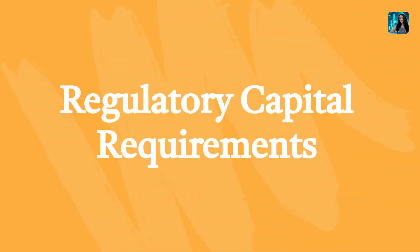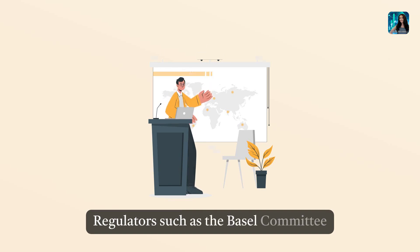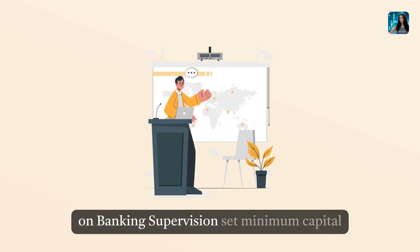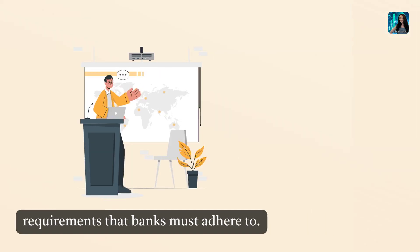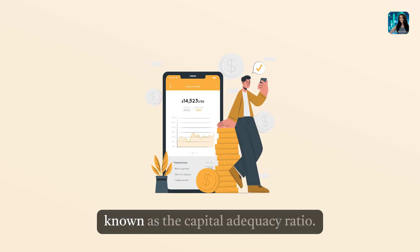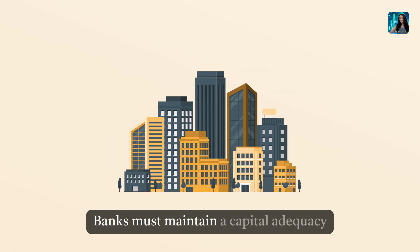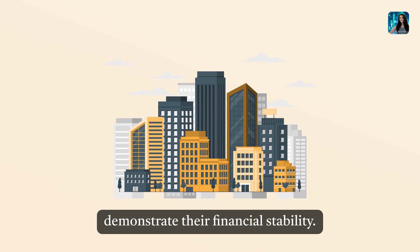Regulatory capital requirements: Regulators, such as the Basel Committee on Banking Supervision, set minimum capital requirements that banks must adhere to. These requirements are based on a percentage of a bank's risk-weighted assets, known as the capital adequacy ratio. Banks must maintain a capital adequacy ratio above the regulatory minimum to demonstrate their financial stability.